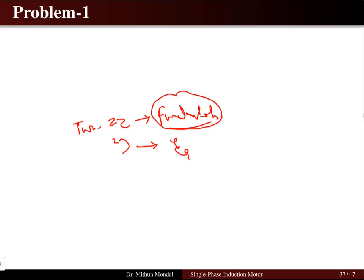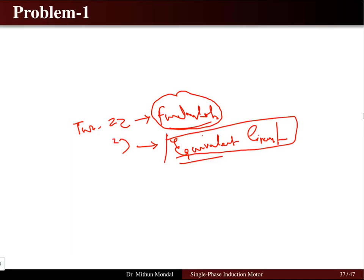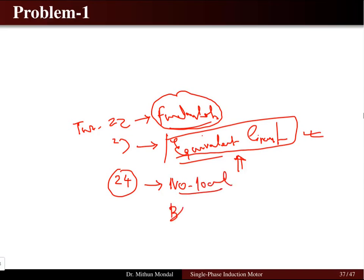In tutorial 23 we discussed the equivalent circuit and how it is used to estimate different parameters such as current, impedance, voltage, torque and power. Now in this tutorial 24 we will see how the parameters of the equivalent circuit are estimated using two important tests: the no-load test and the block rotor test. The theory part of these two tests has been discussed in detail in the lecture class, and now we will see the problems related to them.